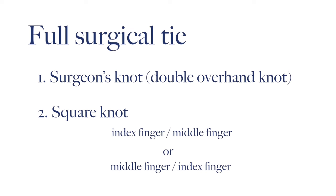For a full surgical tie at least three single knots are needed. The beginning is made by a double overhead knot followed by a square knot which contains two half knots, either an index finger middle finger combination or a middle finger index finger combination.